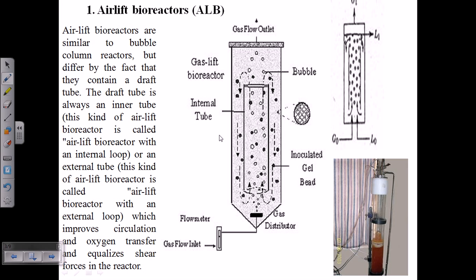The airlift bioreactor is similar to bubble column reactors but differs in that it contains a draft tube — a small hollow tube inside a large outer tube. The name suggests that air is lifting all the nutrients from one place to another. There must be a gas distributor: air enters through the air inlet and carries nutrients such as gel beads with it, circulating upward through the inner hollow tube, coming out at the top, and then circulating back down — a continuous circulation of air.